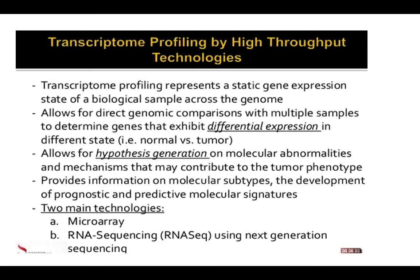It provides information on molecular subtypes, development of prognostic and predictive molecular signatures. In expression profiling, we identify some genes as biomarkers. If you need to diagnose a disease such as cancer, you can use those genes as biomarkers. There are two main technologies: the first one is microarray, and the second one is RNA sequencing, also called RNA-seq, which uses next-generation sequencing. You should be familiar with both of these technologies.